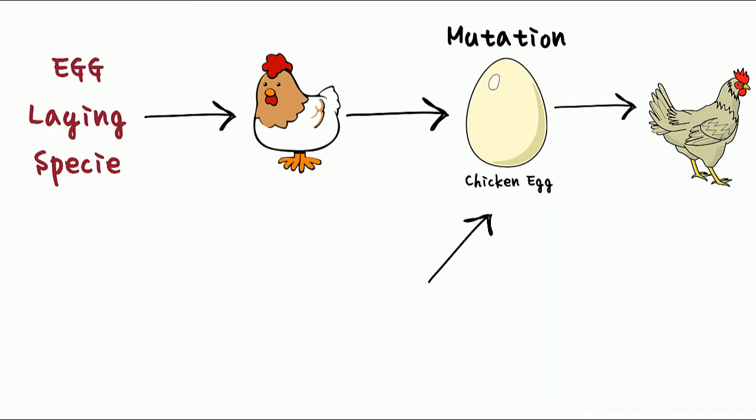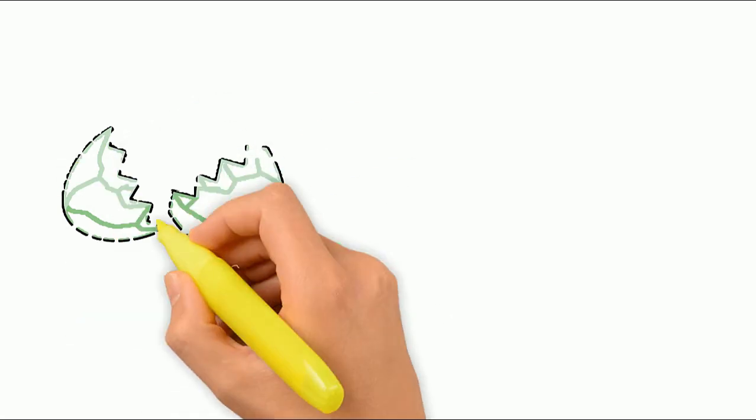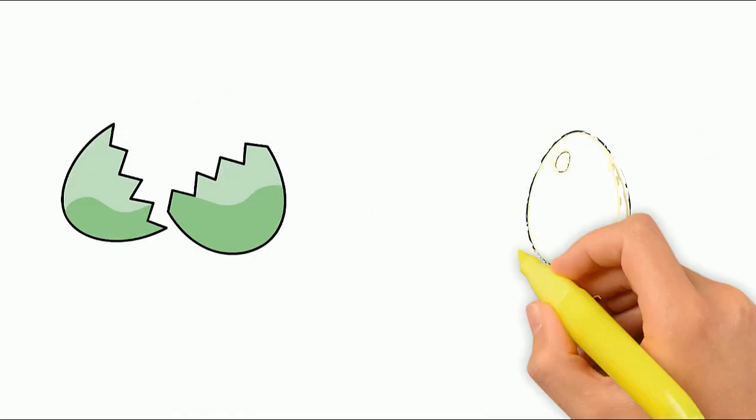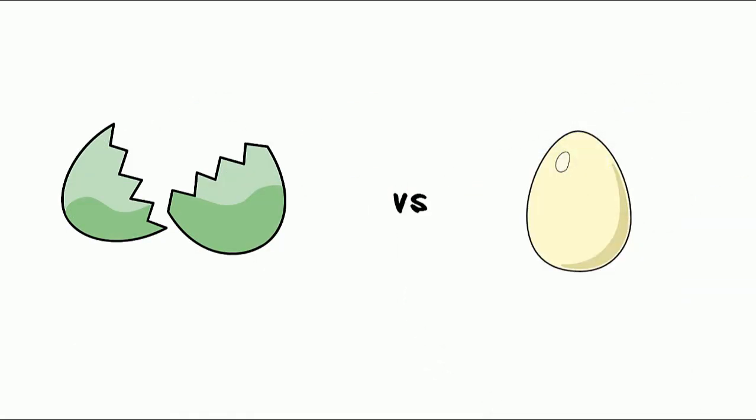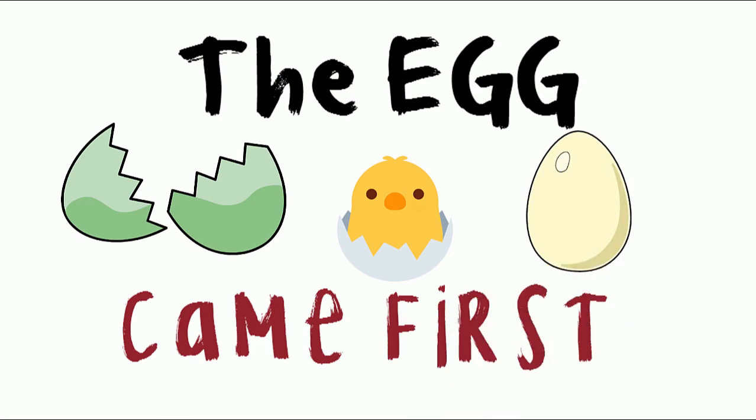Which brings us back to the nomenclature and the question of what is a chicken egg—which is a fairly meaningless question. But at the end of the day, what we can all agree on is that regardless of whether it was a chicken egg or a proto-chicken egg, the first true chicken came from an egg. The egg came first.